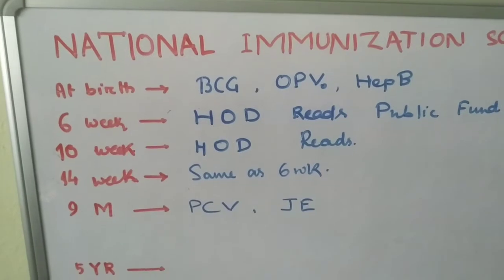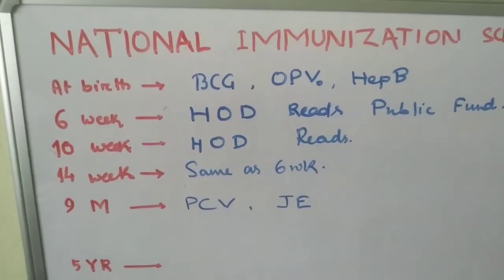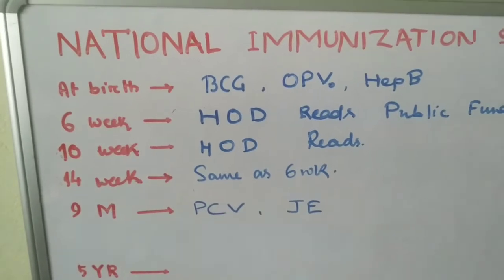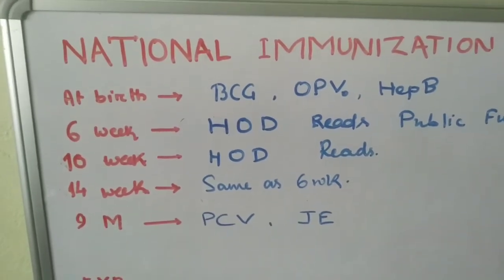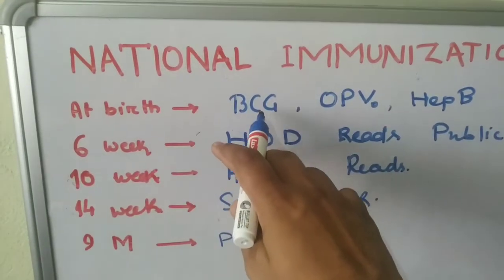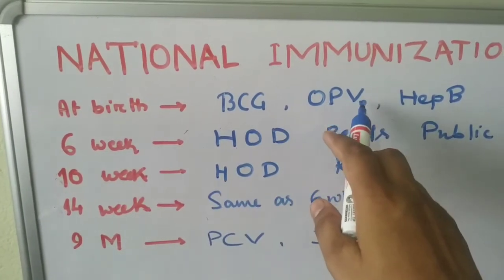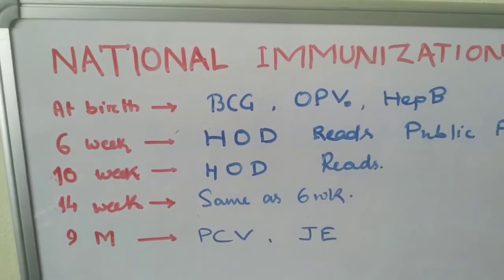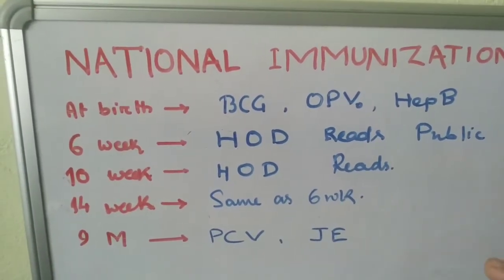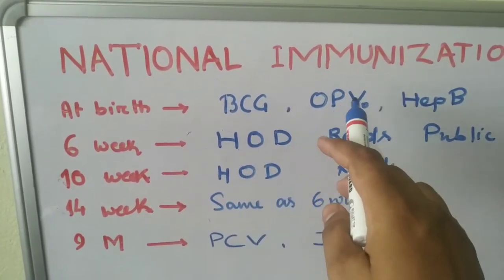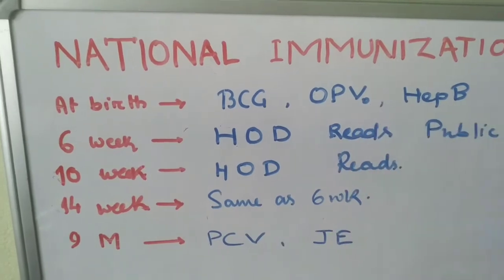At birth, we will give BCG for tuberculosis, OPV0 (0 means birth dose), and hepatitis B. To be remembered, at birth we are giving BCG, OPV0, and hepatitis B.